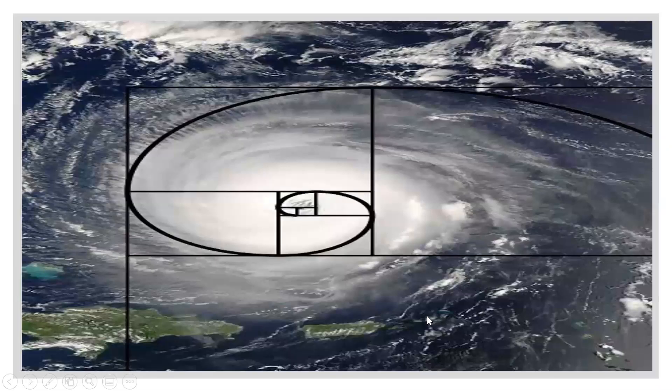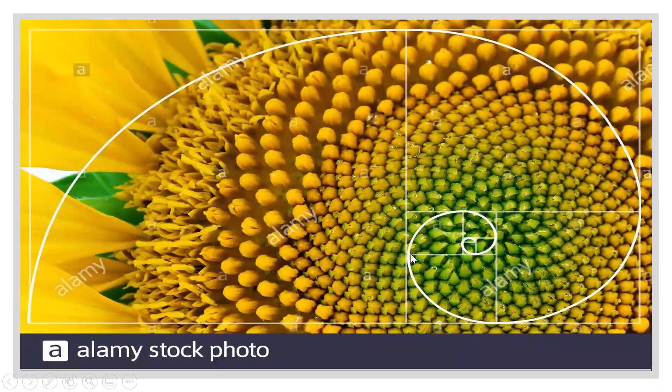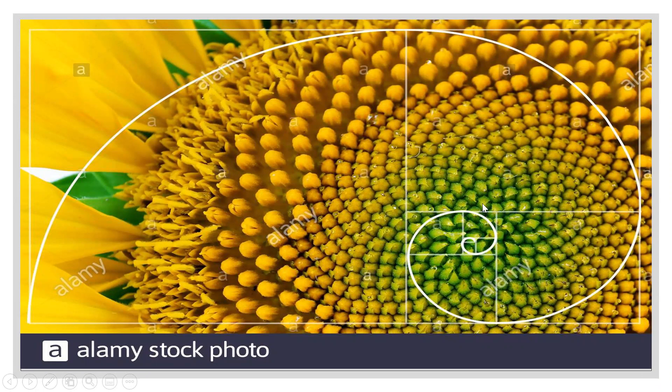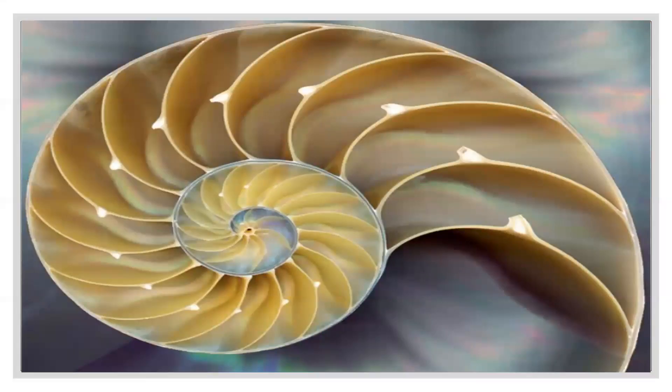The application of Fibonacci sequence is present around. Just like this hurricane or typhoon, its structure is governed by Fibonacci sequence. Another one is the sunflower. The arrangement of seeds is also governed by Fibonacci sequence: the galaxy, the nautilus shell, and many more.